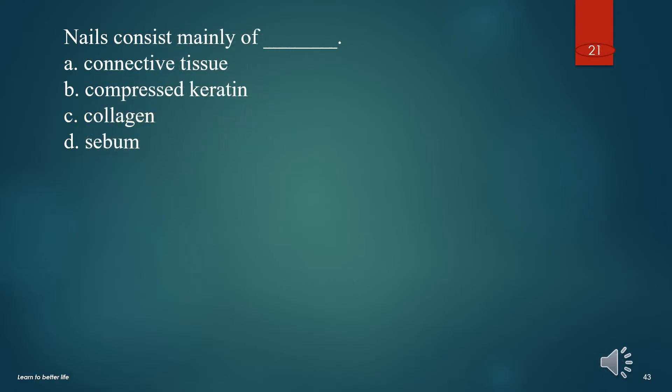Nails consist mainly of what? A. Connective tissue. B. Compressed keratin. C. Collagen. D. Sebum. The answer is B. Compressed keratin.